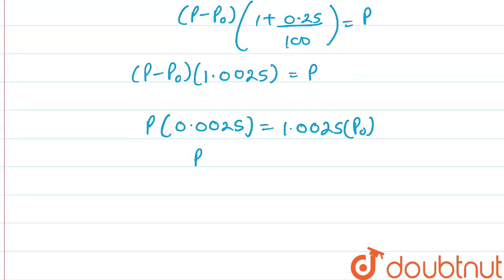And from here we can divide this by, 1.0025 p0 upon 0.0025. This will give us p is equal to 4.01 p0.